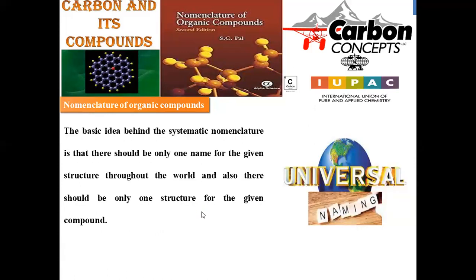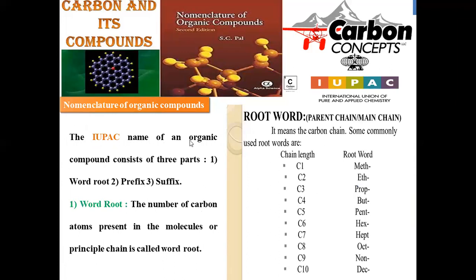To name any organic compound in accordance with IUPAC, we first have to classify the name into three major parts: one is the root word, second is the prefix, and third is the suffix. The root word is the main word which gives the major meaning of that compound. The prefix is what we incorporate at the first position, and the suffix comes at the end of the compound name.